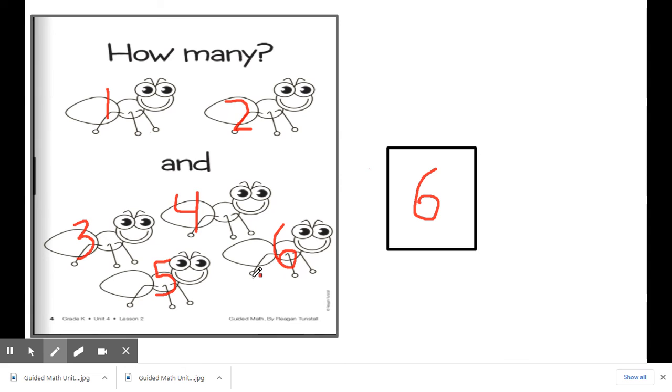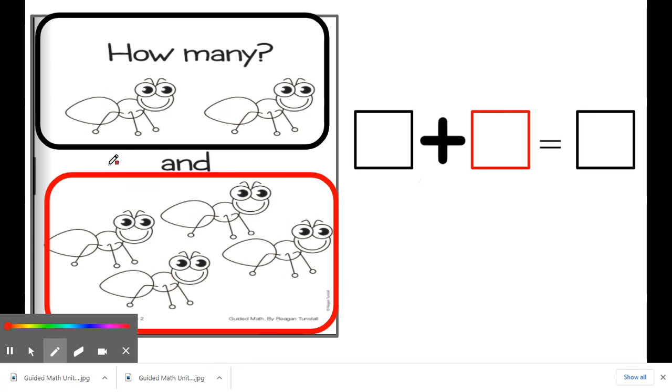All right, now we're going to practice creating a number sentence with our ants. Ready? Okay, now let's look how many ants we have in our first group. How many do we have? One, two. Yes, good job. So what number am I going to put in the first box? Two. Yes, great. And remember plus means to do what? That we're going to be joining and we're going to join our second set or our second group. And how many are in our second group? Let's count.